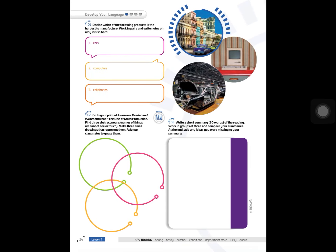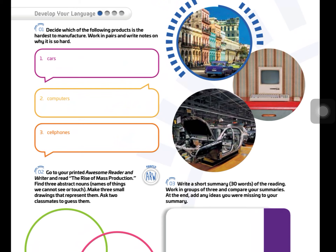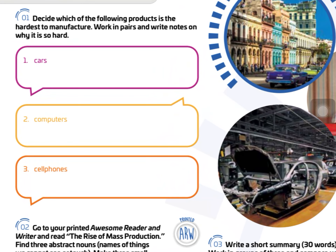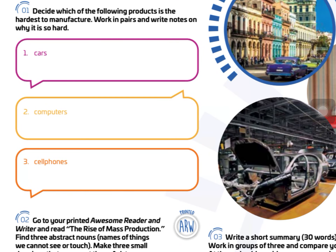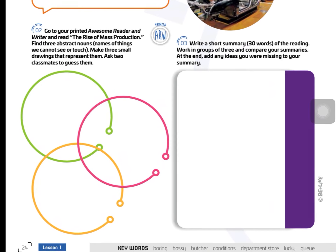We are going to start on page 24 with the Shaping My Language book. Exercise 1: decide which of the following products is the hardest to manufacture. Work in pairs and write notes on why it is so hard. You don't have to work in pairs — just decide which one of these three is the most difficult to manufacture in your opinion.